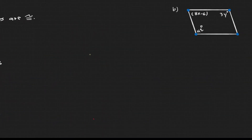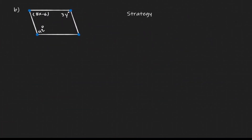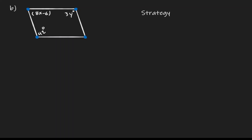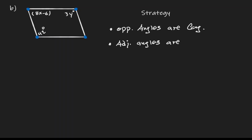Let's take a look at another example. Now let's think about how to approach this problem. Looking at the givens, every expression is in terms of angles. In terms of strategy, let's think about the properties we need to show for angles. We know that opposite angles are congruent, and in addition, adjacent angles are supplementary.